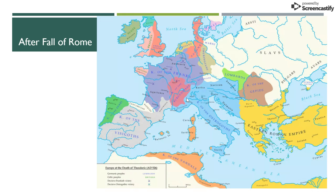After Rome falls, we really don't see the recreation of another strong united empire in Europe for a very long time. The Eastern Roman Empire still stays in existence — its capital, of course, is in Constantinople — but we're going to talk about that at a later point. After Rome collapses, Europe divides up into a lot of smaller territories.